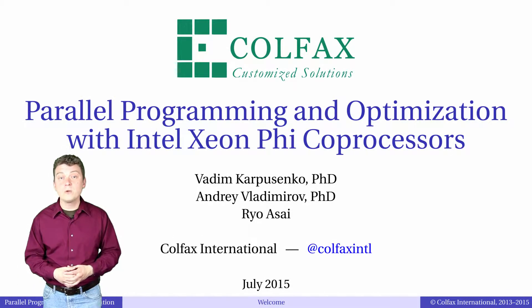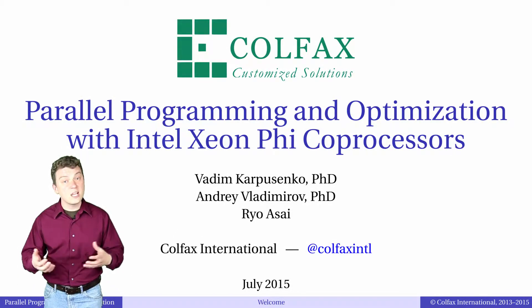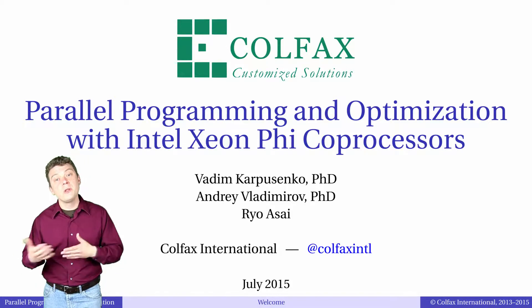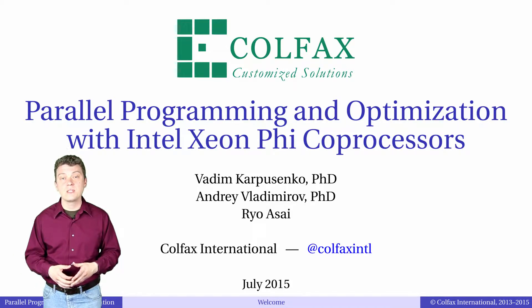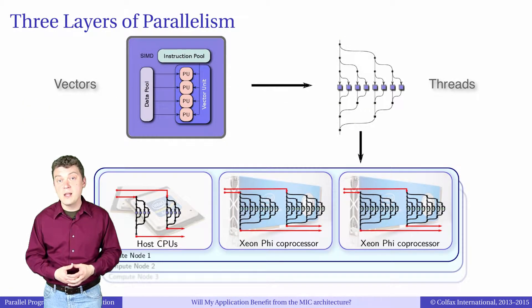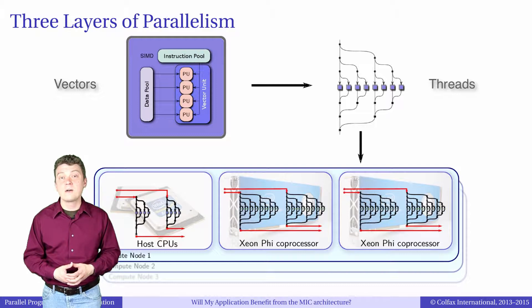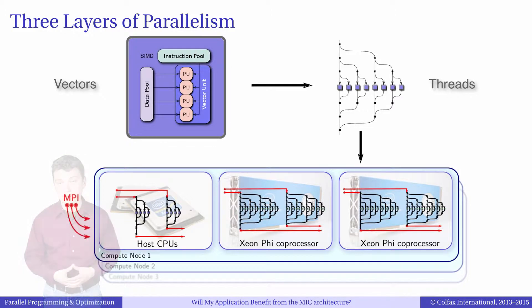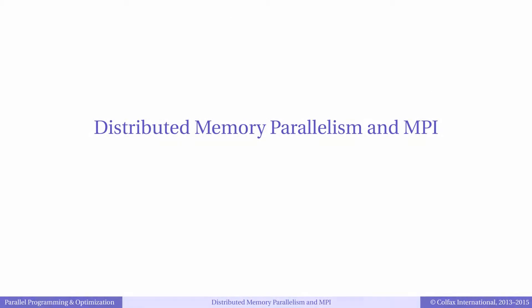In the previous episodes of this chapter we learned how to use vectorization to parallelize calculations across vector lanes in each core. Then we talked about how to use OpenMP to scale applications across cores in each processor and coprocessor. Now in this final episode 4.9 of this chapter we'll study the next level of parallelism: scaling across multiple compute devices and multiple compute nodes in a cluster environment. We have briefly discussed MPI in the previous chapter where we talked about programming models for Intel Xeon Phi processors.